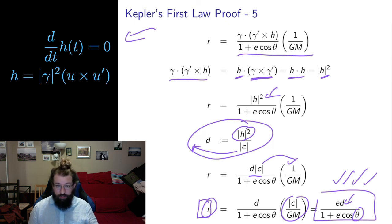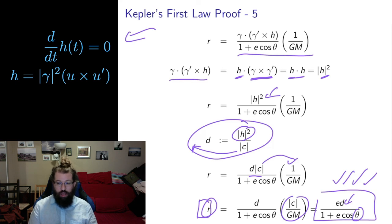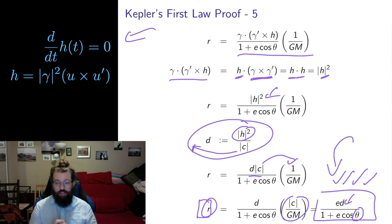Thanks for sticking around for this quite lengthy video proving Kepler's first law. The point is to show how this new description of conics and the tools of parametric curves — their derivatives and cross products — all fit together. Starting with Newton's law of gravity and vector calculus with parametric curves, we derived elliptical orbits, which is exactly what Kepler observed — a remarkable historical connection in the mathematics of calculus. In the next video, we'll prove Kepler's next two laws.